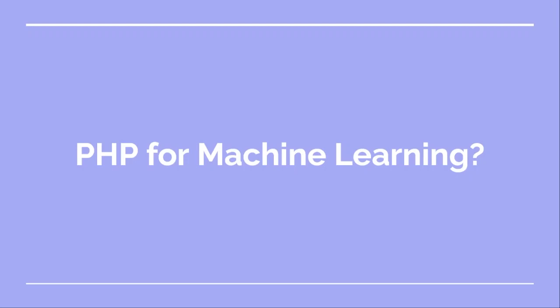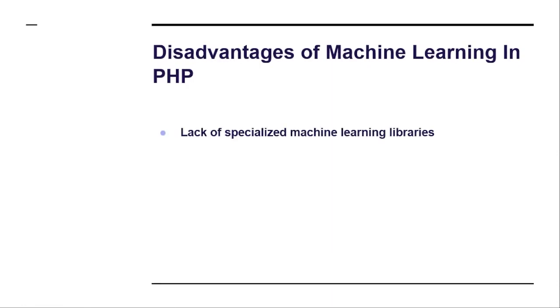But there are a few disadvantages of using PHP in machine learning. For example, there aren't a lot of specialized machine learning libraries. Compared to what we have in Python, there are very few libraries in PHP. And we need better efficiency when dealing with complex data — both in terms of scale, like billions of texts, and also in terms of data types: audios, videos, images. We need more efficient and optimized algorithms to use that data for machine learning projects.